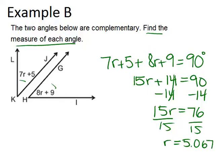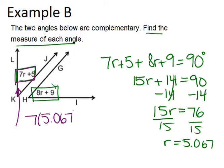Now that we know r, we can figure out the measure of each angle by plugging our answer for r back into each expression. So let's start by doing 7r plus 5 in order to find the measure of angle LKJ. So I'm going to plug in 5.067 in for r, and then evaluate. With the help of my calculator, I get 40.469 degrees.